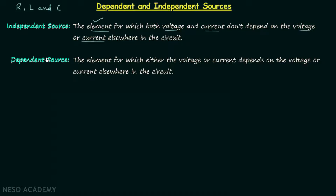A dependent source is the element for which either the voltage or current depends on the voltage or current elsewhere in the circuit. This means if the voltage across the element depends on the voltage or current in another part of the circuit, or if the current through the element depends on the voltage or current in another part, then the source is a dependent source.